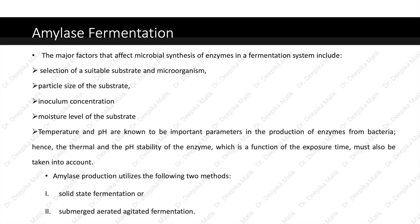After the selection of the medium and the microorganism, the next step for the production of amylase is fermentation. The major factors that affect microbial synthesis of enzymes in a fermentation system include selection of a suitable substrate and microorganism, particle size of the substrate, inoculum concentration, moisture level of the substrate, and temperature and pH. The thermal and pH stability of the enzyme, which is a function of the exposure time, must also be taken into account. Amylase production utilizes two methods: solid state fermentation or submerged aerated agitated fermentation.